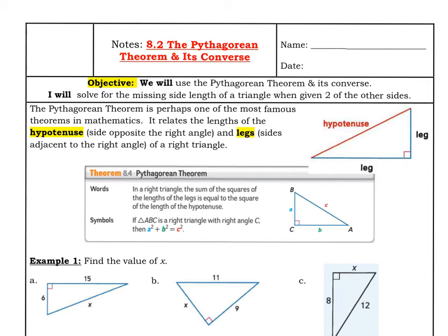Hey everybody, welcome to chapter 8, section 2: the Pythagorean Theorem and its Converse. At this point, you've probably been exposed to the Pythagorean Theorem — you probably know that a squared plus b squared equals c squared. In this video, I'm going to go into a bit more detail and show you some different types of examples that relate to the Pythagorean Theorem.